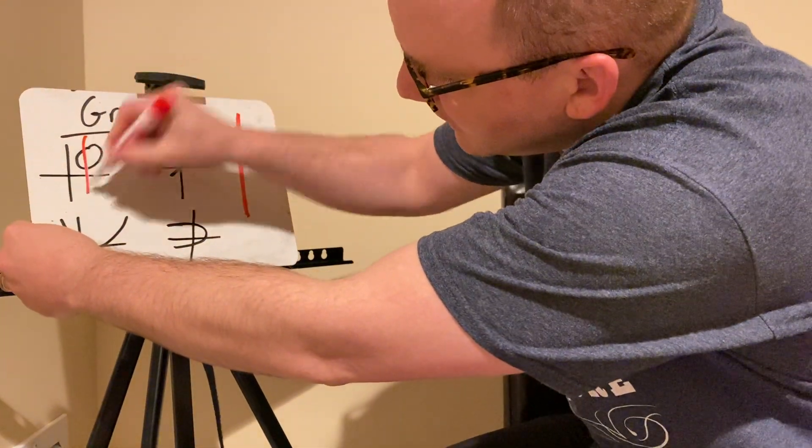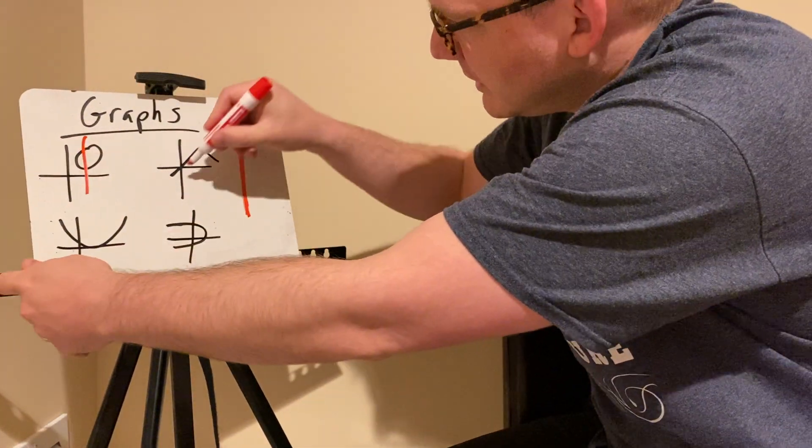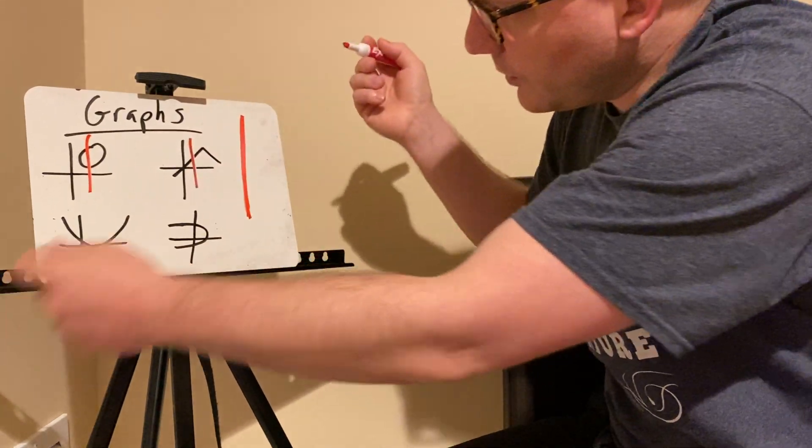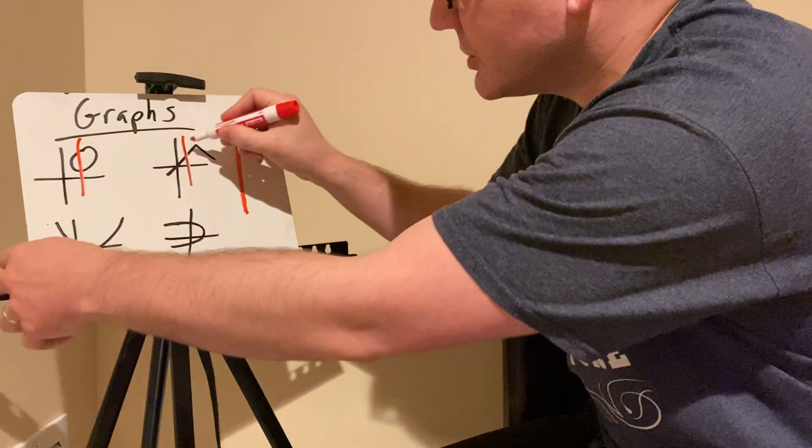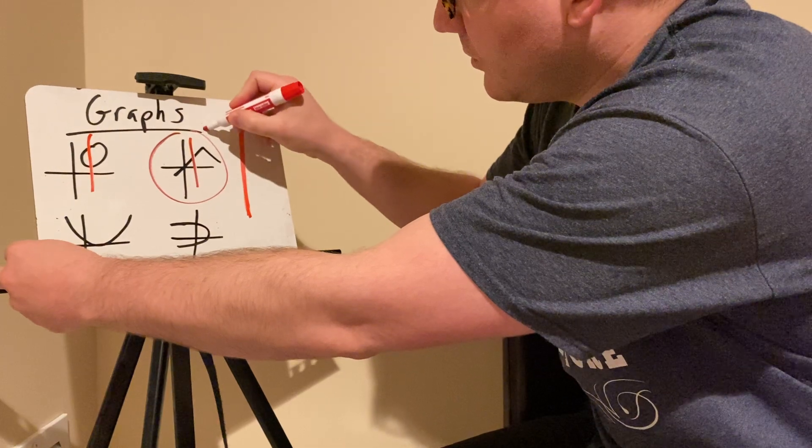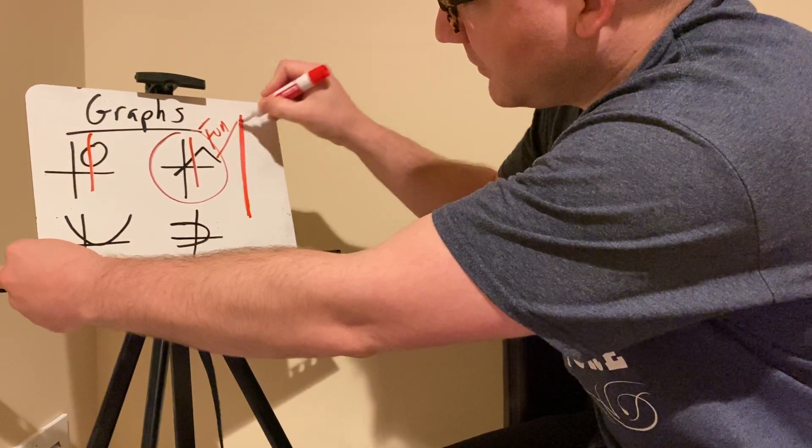So for example, this circle is not a function. This line here, there's no point where you can go through it twice. This is a function. So this is, we'll put F-U-N for function.